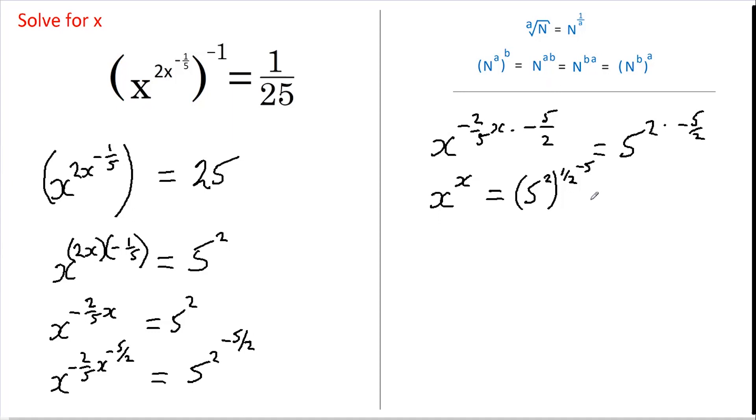So why have I done that? Well, this now becomes x to the power of x equals—what is 5 squared square rooted? Well, it's just 5. In fact, it's plus or minus 5, and that is still all raised to the power of negative 5.